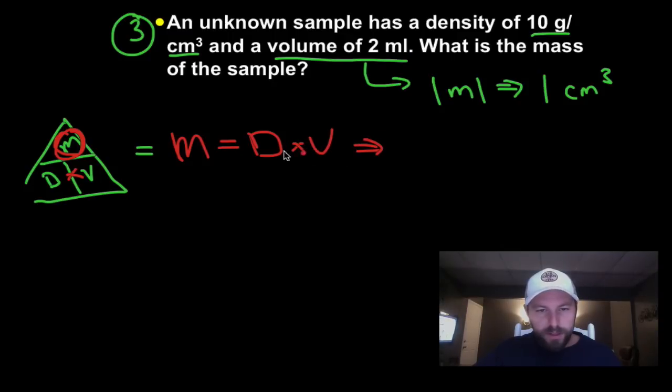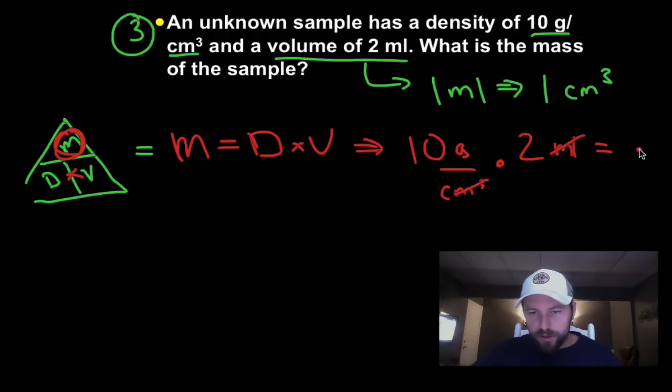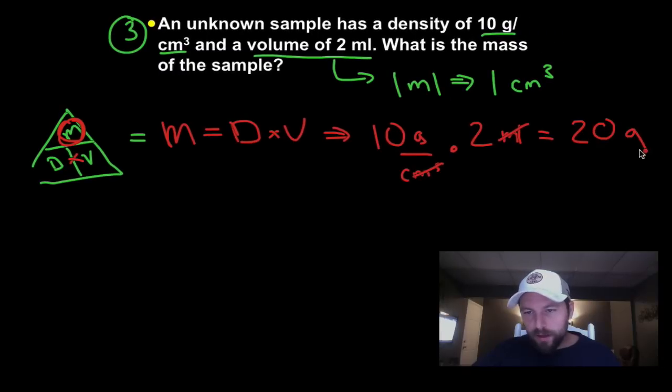Keep going. We're going to substitute in our density was 10 grams per centimeters cubed times, remember, a milliliter is the same as centimeters cubed, 2 milliliters. Let me do this. This is going to cross that, cross that. And so we get 10 times 2 is 20 grams.